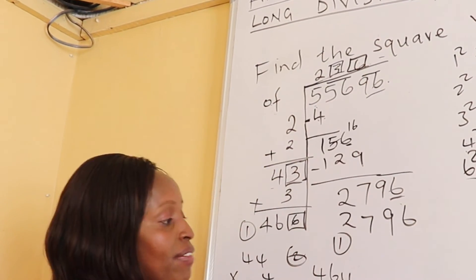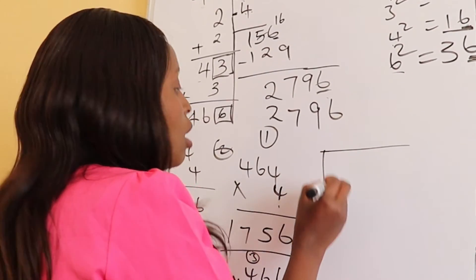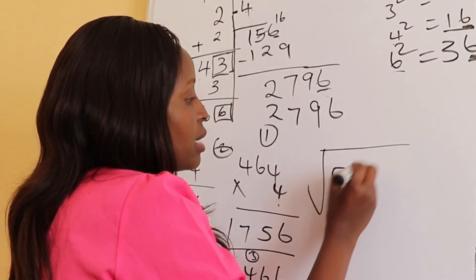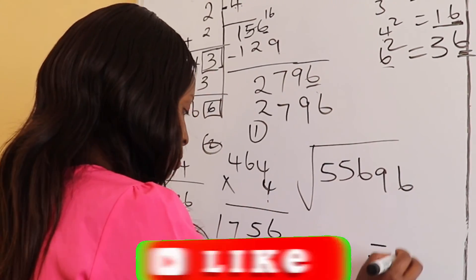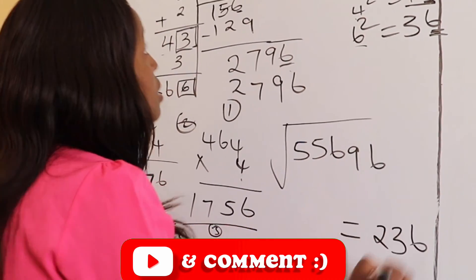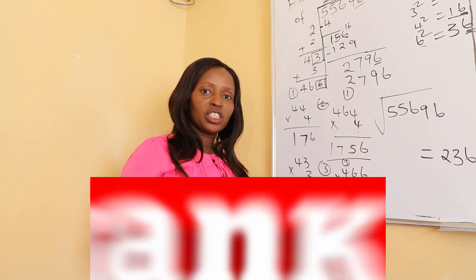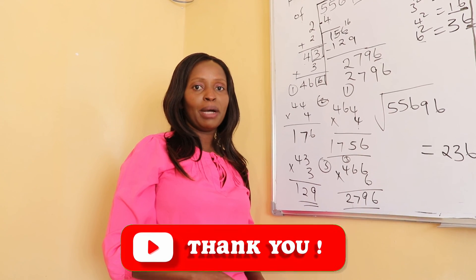Therefore, the square root of 55696 equals 236. Thanks for watching, let's meet in the next video. Bye bye.